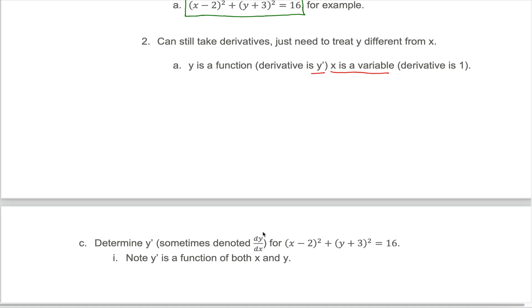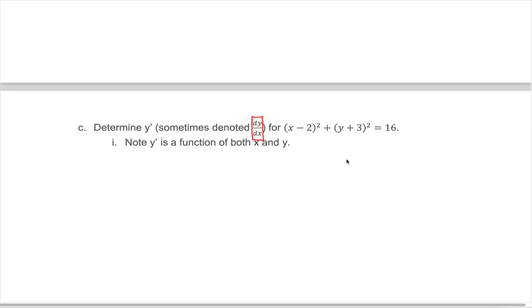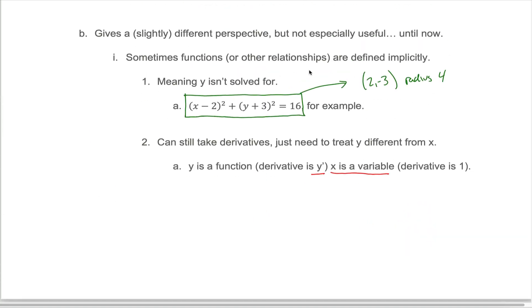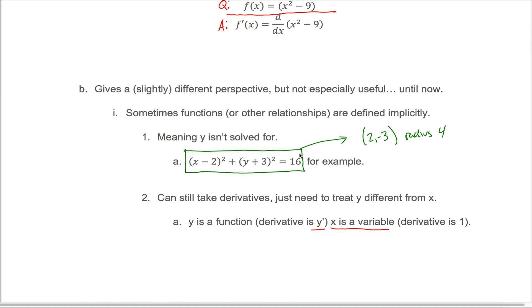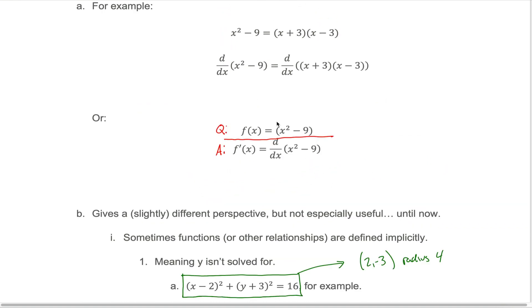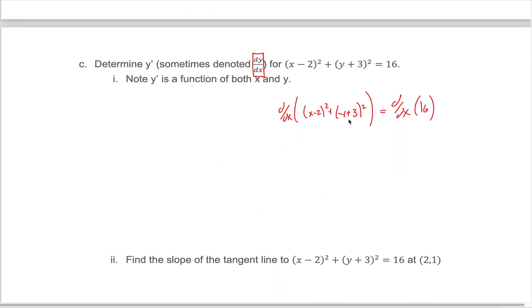Let's try to determine y prime — sometimes denoted dy/dx, to tell the reader we're treating y's and x's differently; y is treated as a function, x is treated as a variable. For the equation (x-2)² + (y+3)² = 16, we take the derivative of both sides: the derivative of (x-2)² + (y+3)² equals the derivative of 16.